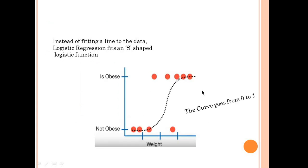Instead of fitting a line to the data, logistic regression fits an S-shaped logistic function. The curve goes from 0 to 1.